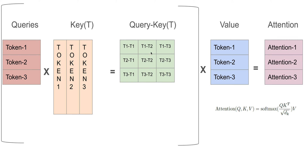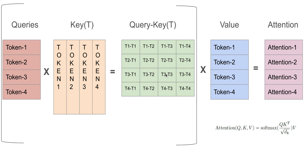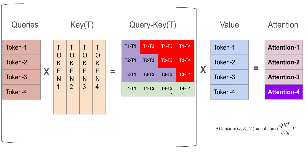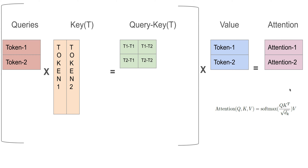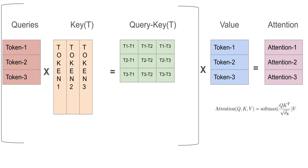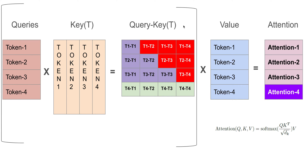The whole point is: when we have already calculated these values, why calculate them again? We can only calculate the new part. The same thing is happening here - we have already calculated this but we are again calculating it. The major part we don't even need. Similarly, why do we need to calculate attention 1, attention 2, attention 3? We only need to calculate attention 4, because attention 1, 2, and 3 values will remain the same anyway.